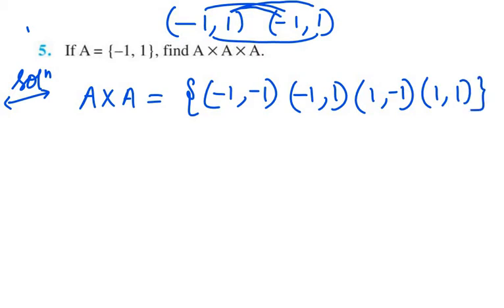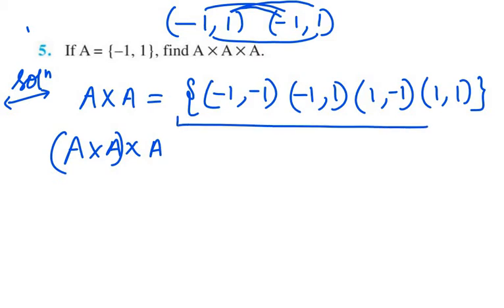Now we need to find A cross A cross A. We have the value for A cross A, and now we need to multiply this with A.